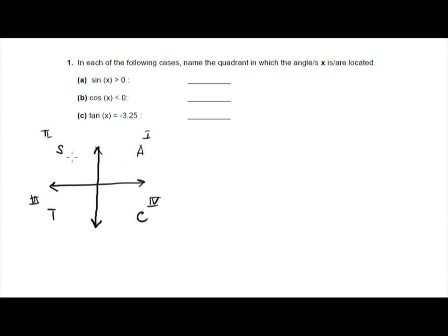S means sine, so when you see S it means the only function that is positive in the second quadrant is sine. The only positive function in the third quadrant is tangent, and the only function that is positive in the fourth quadrant is cosine.